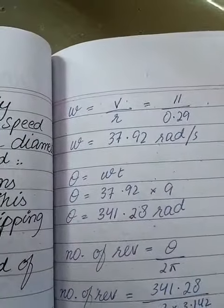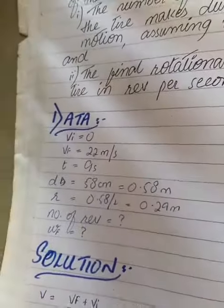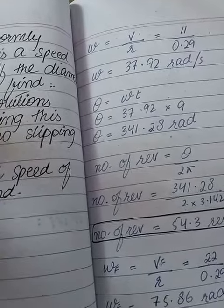Now, omega equals V upon R. The average velocity V is 22 plus 0 divided by 2, which equals 11 meter per second. The value of R is 0.29. So omega equals 37.93 radian per second.